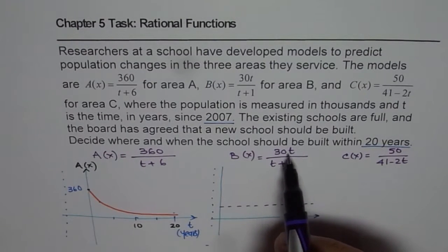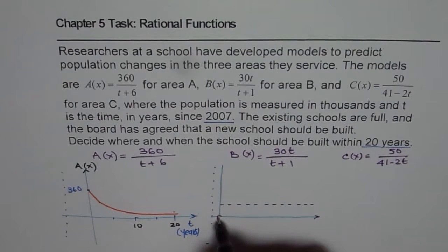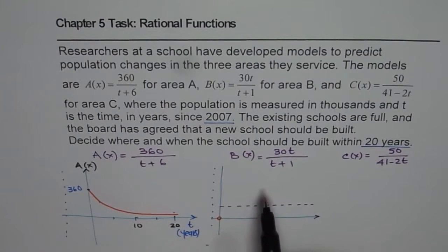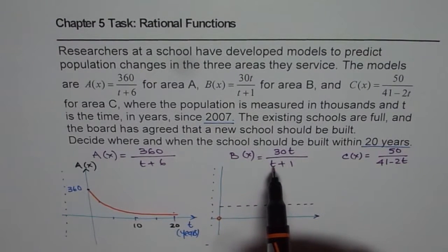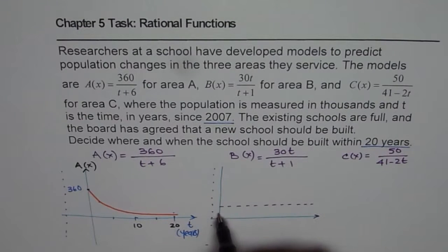If t is 0, in that case we get a value of 0. Now as t increases, let us say we have a value of t as 1. In that case, it will be 30 over 2, which is 15, which is kind of half of it.